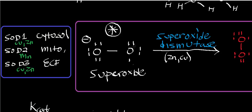Welcome back to the playlist on free radical physiology and biochemistry. In this video we're going to go over the production, destruction, physiology, and biochemistry of superoxide. The very first thing you should notice about superoxide is that it's very similar to molecular oxygen, except it has an extra electron.